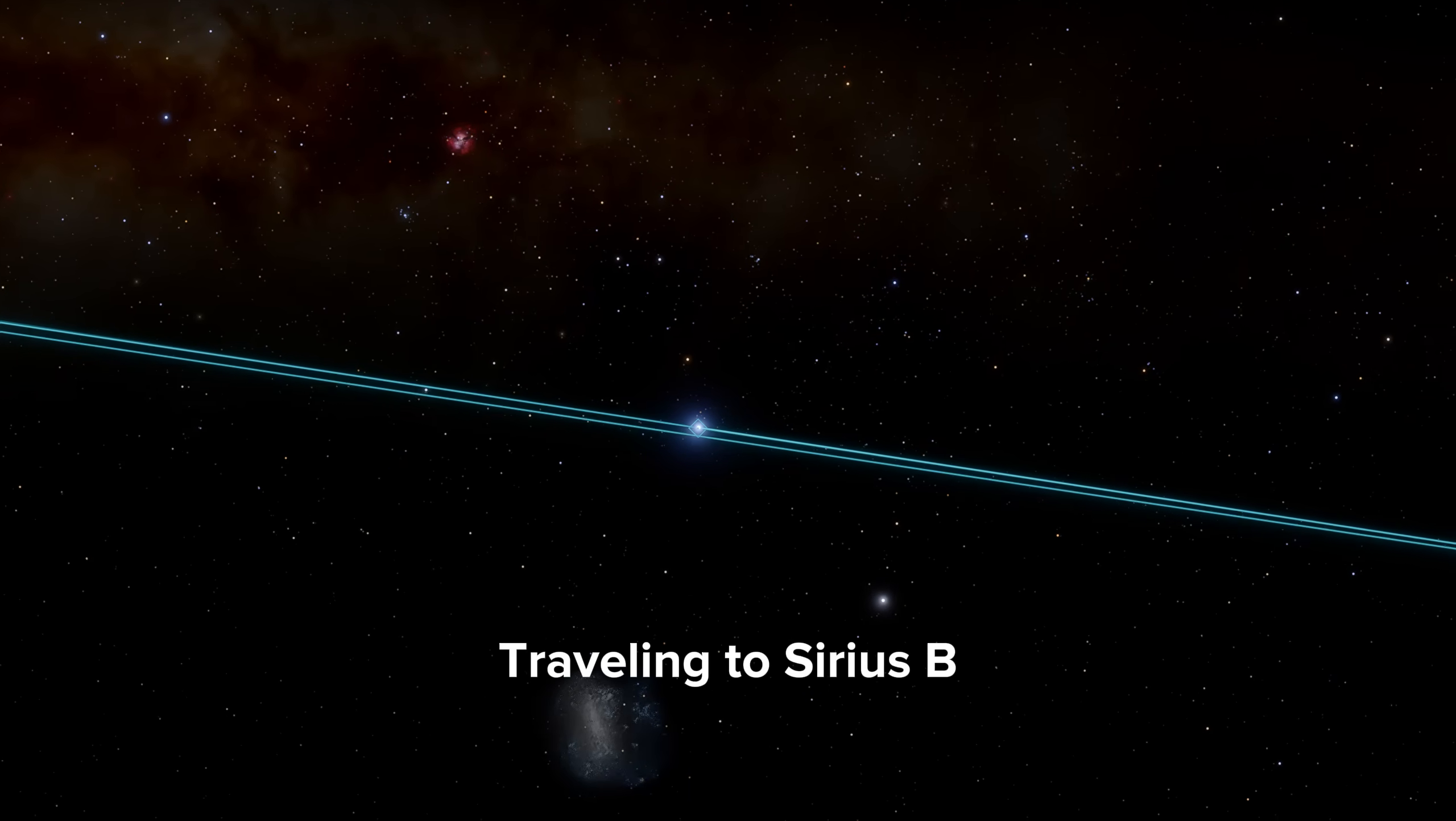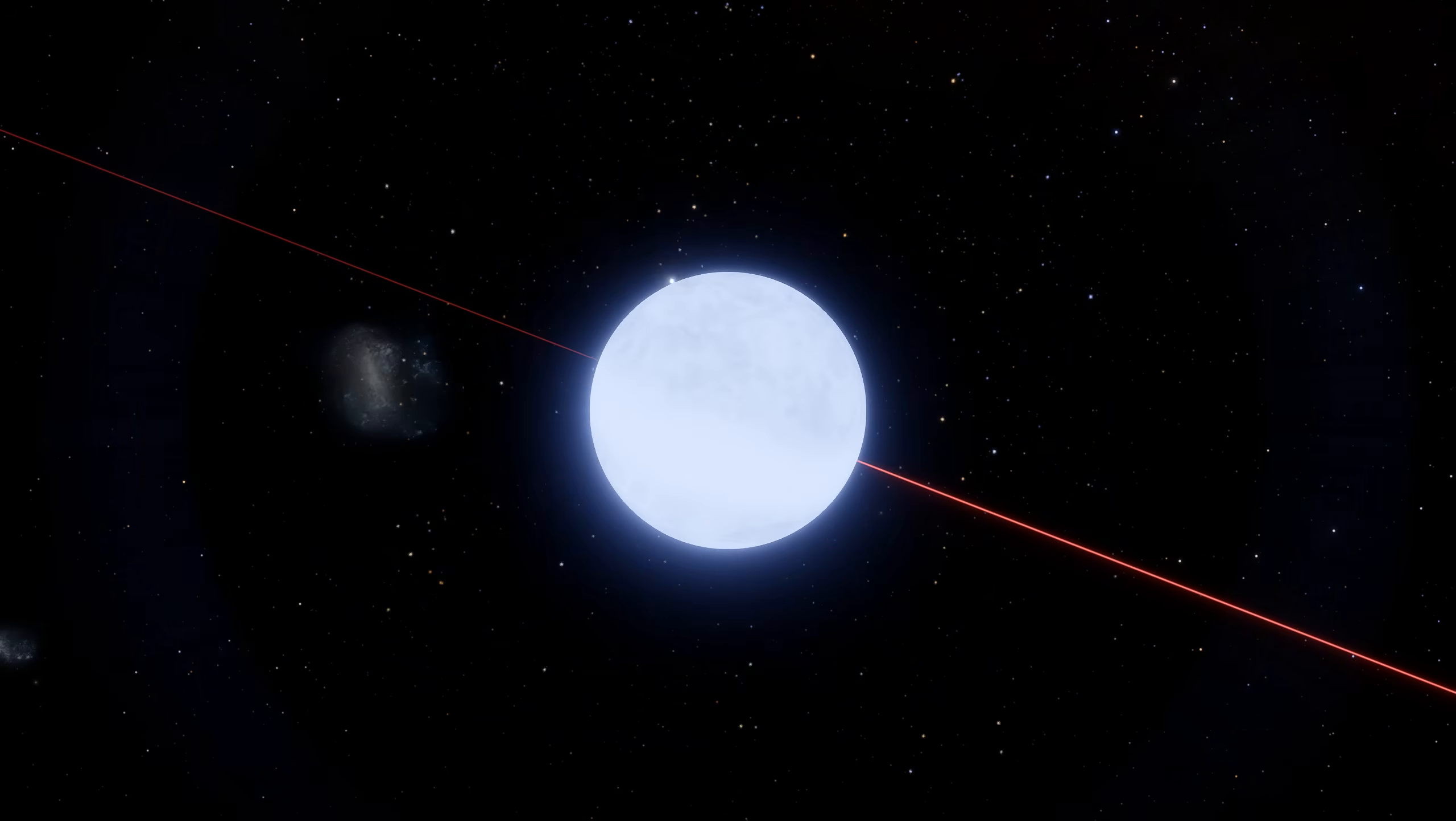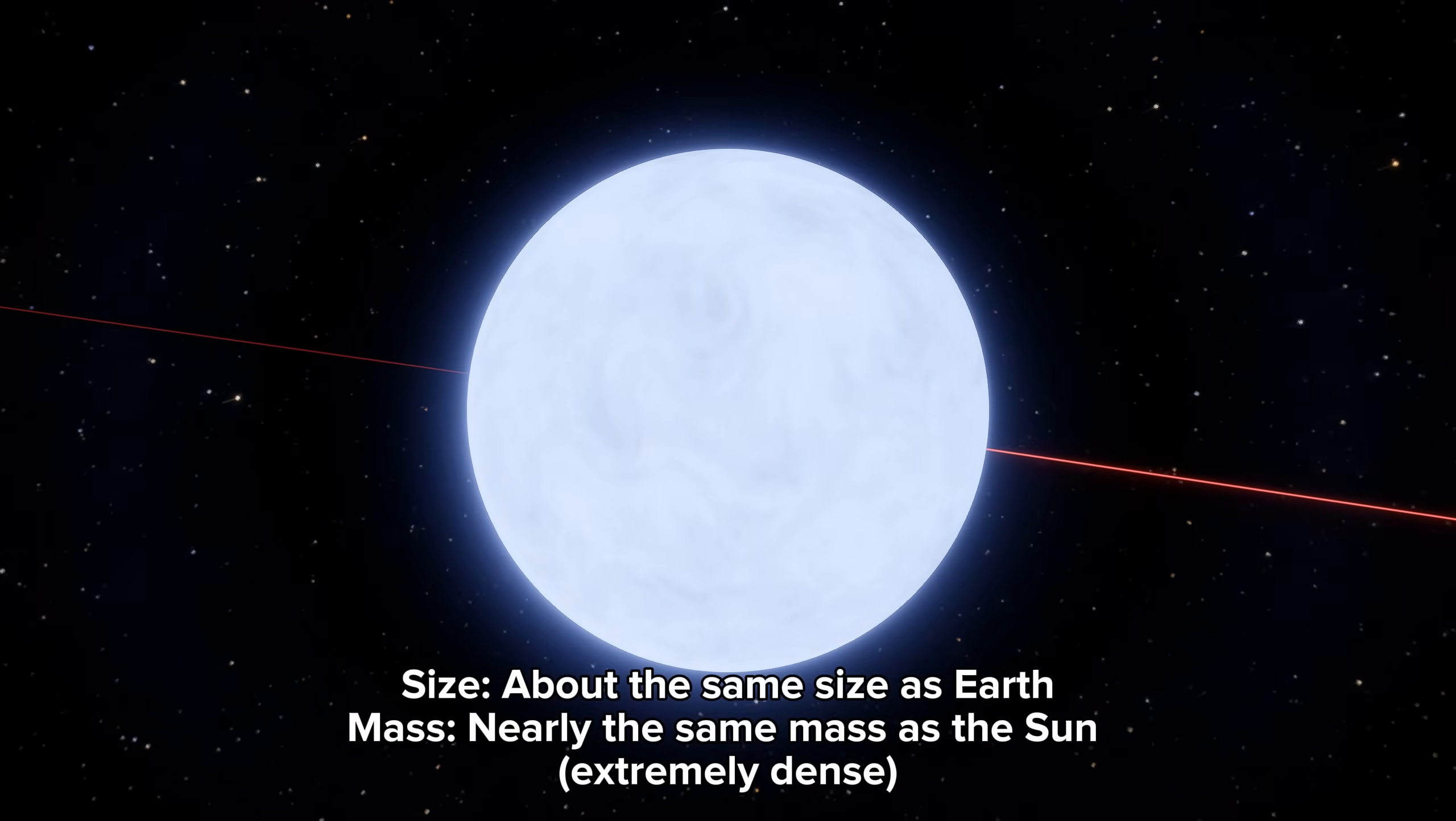Traveling to Sirius B. About the same size as Earth. Nearly the same mass as the sun. Extremely dense.